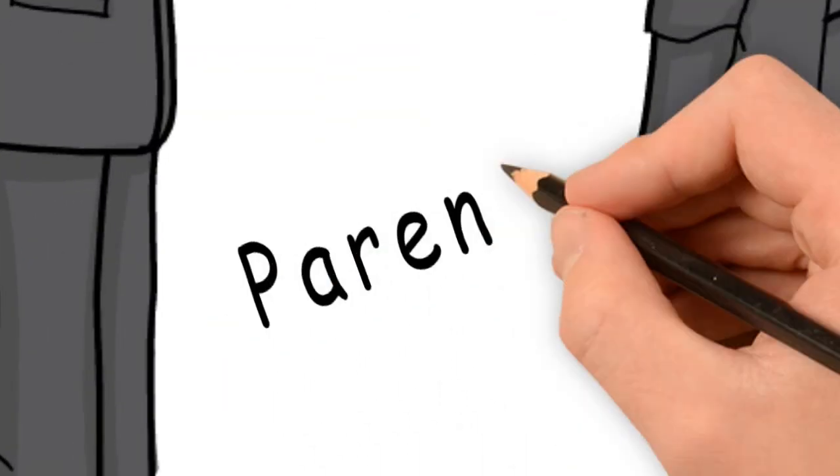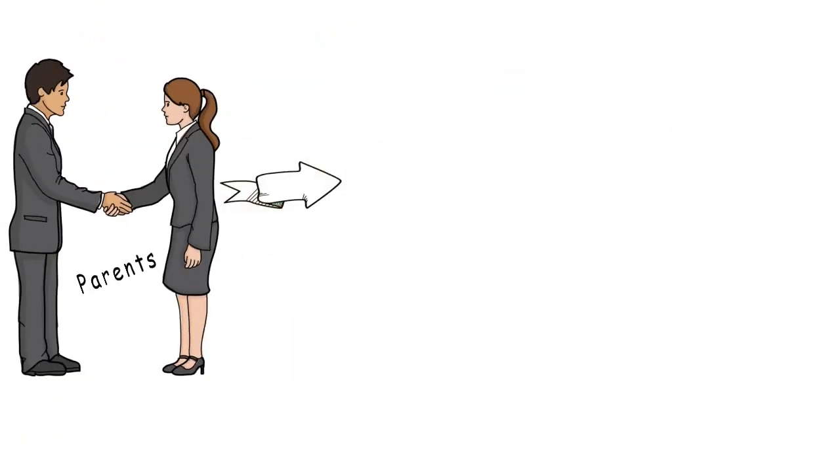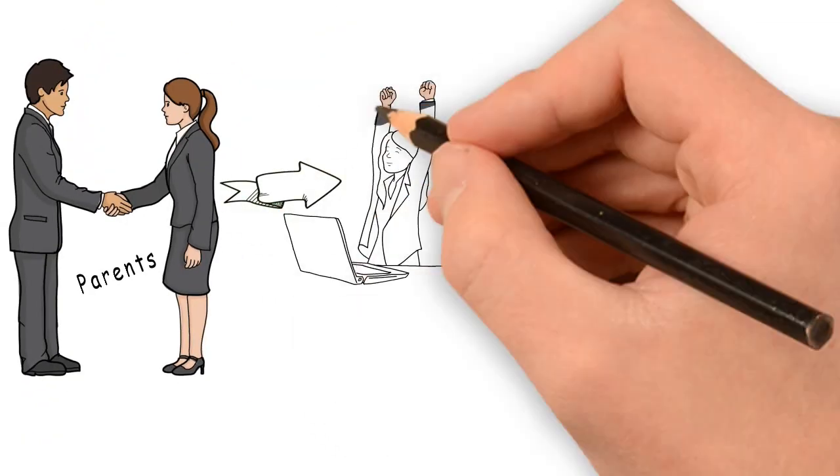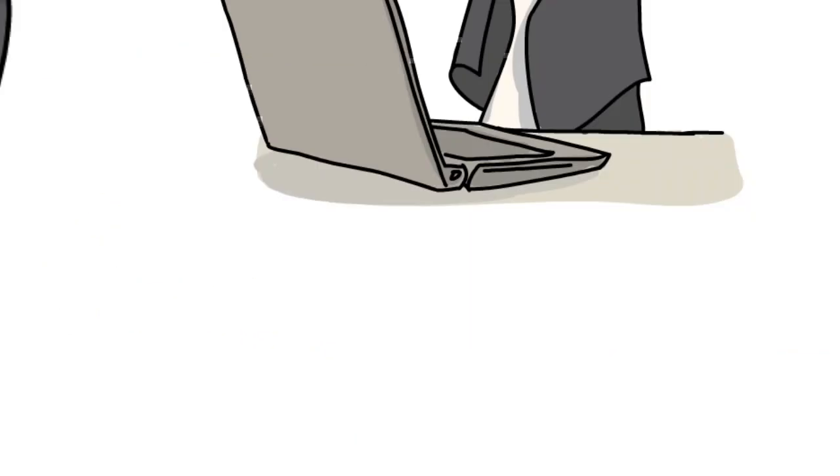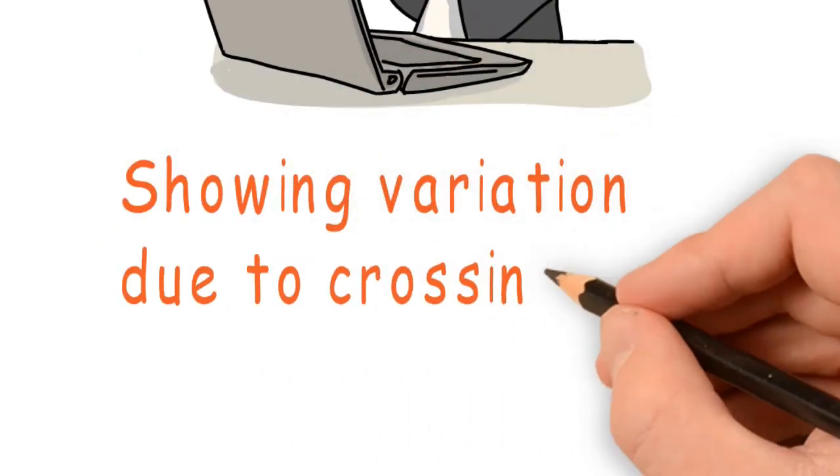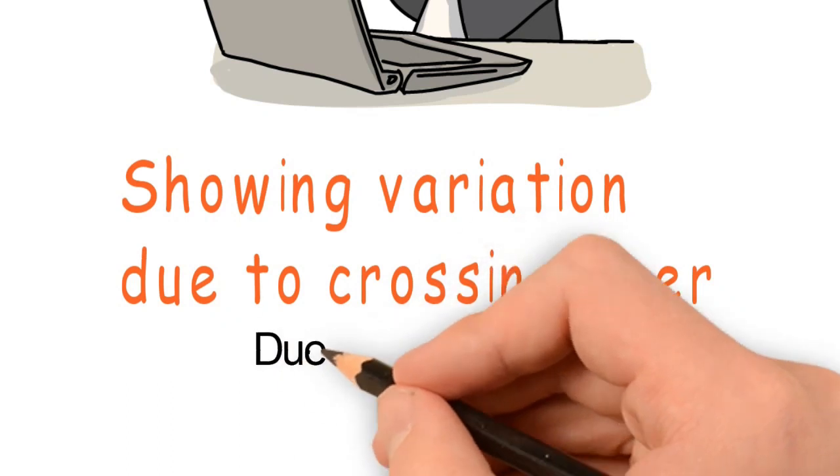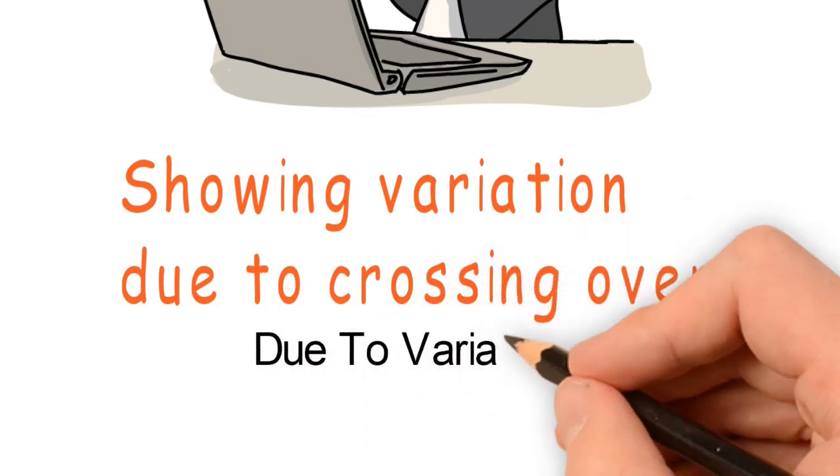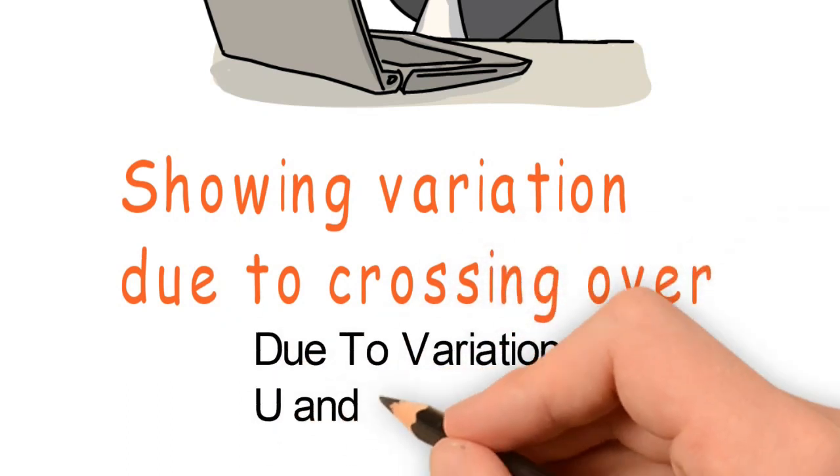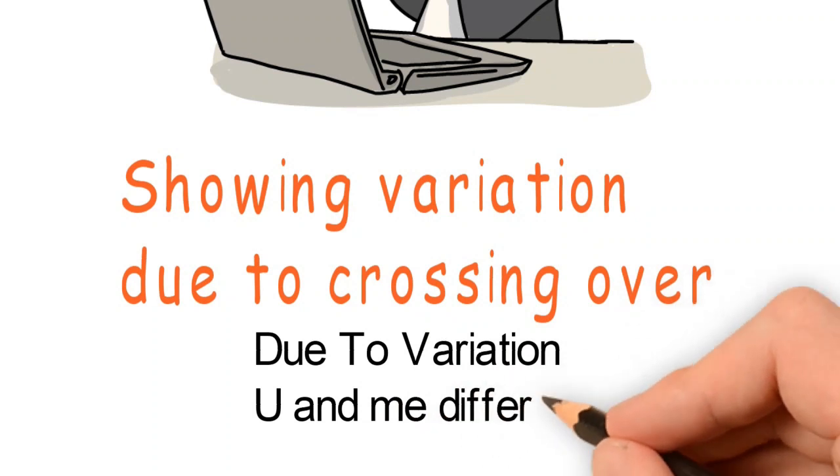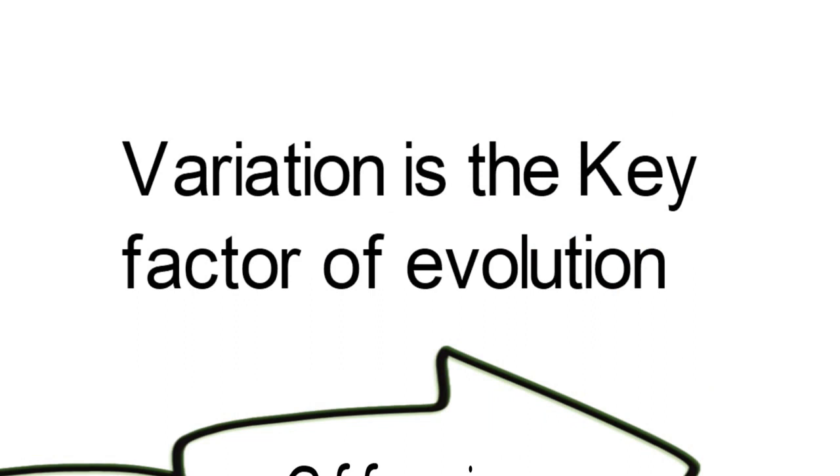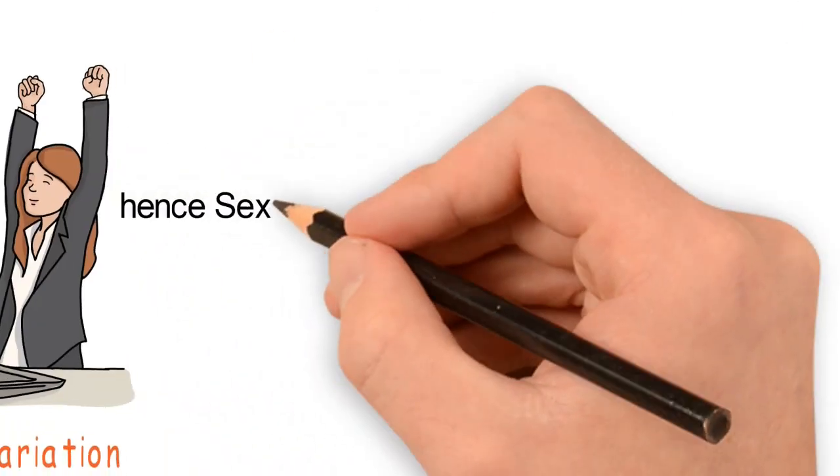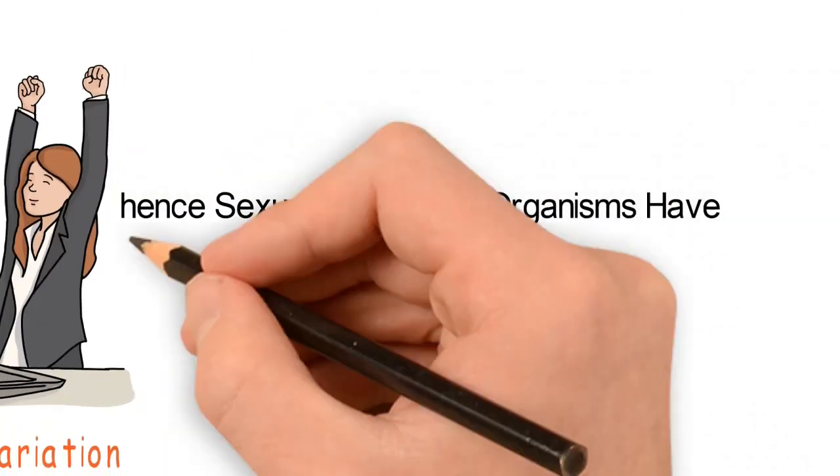These are the parents and they have produced an offspring, and this offspring may have some variations - that is, changes in morphological character or genetic character. This is due to variation. You and me are different from each other, and variation is the key factor of evolution. Hence, sexually produced organisms have greater chance of survival.